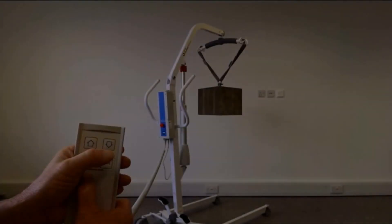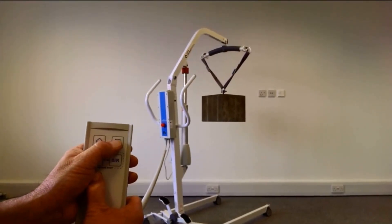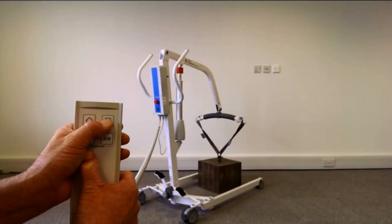With the calibrate button still depressed, lower the boom using the handset until the actuator reaches its lower limit of travel.